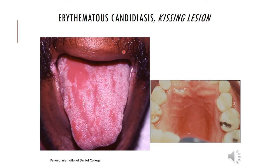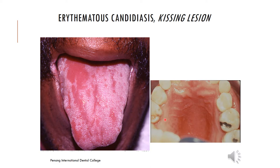Erythematous candidiasis — there is an interesting terminology here called the 'kissing lesion.' Erythematous candidiasis can be patchy, diffuse, or restricted to one area. In this case, two areas are involved: the tongue and the palate. The causes can be an underlying condition, local disturbances like smoking, or prolonged antibiotic use. Since the palate is in contact with the tongue most of the time, a lesion starting on one can spread to the other — that is why it is called a kissing lesion.